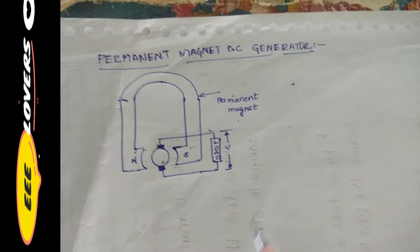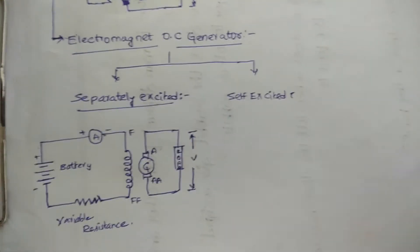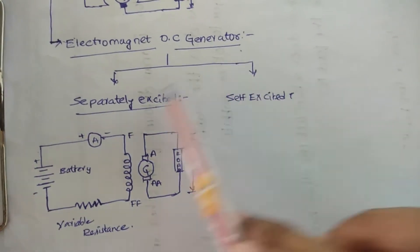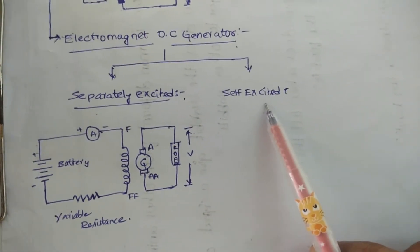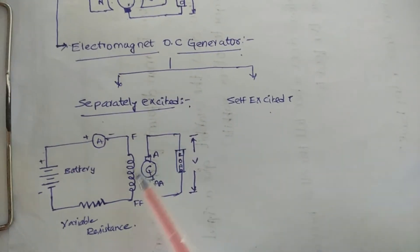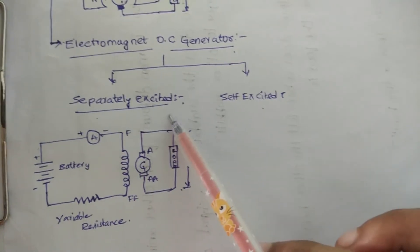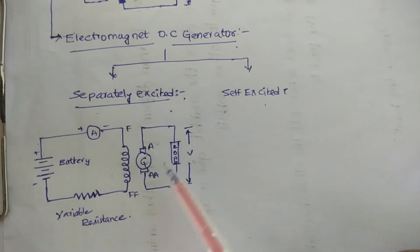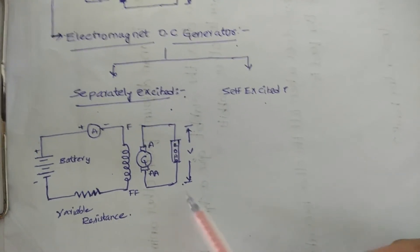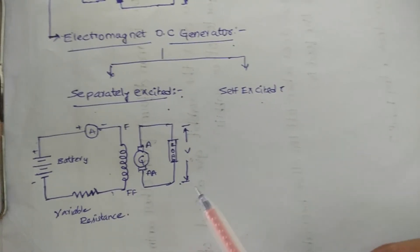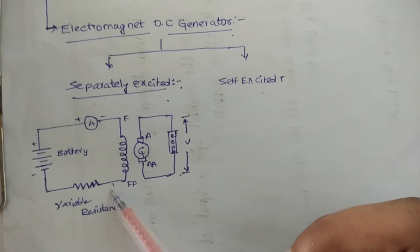Permanent magnet generators are also used in the dynamo of motorcycles and cycles. In the electromagnetic DC generator, classified into separately excited and self-excited types, the separately excited DC generator means the field magnets are excited from an independent external source by using a DC supply — here a battery is given, as shown in the figure.